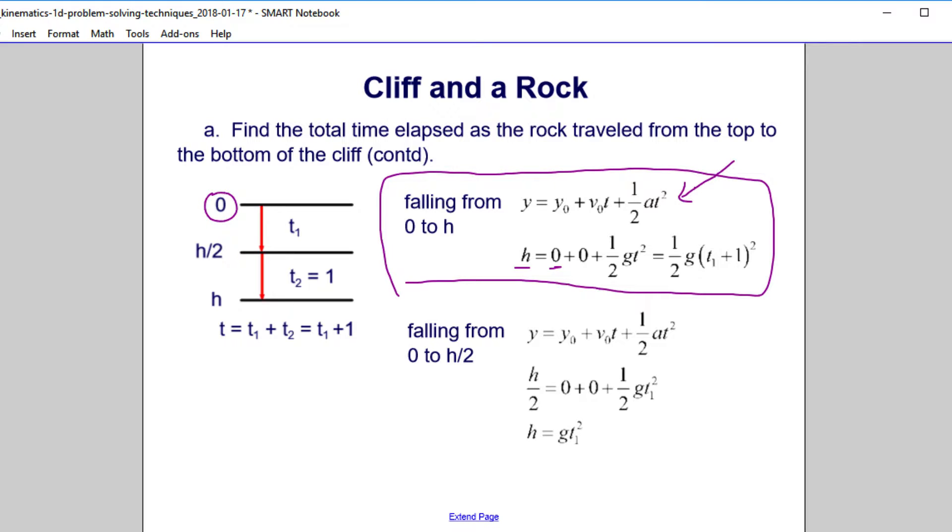And look at this, no v0, so this goes right out. And then we have plus 1 half g t squared. And the plus is because we chose the down direction as positive. So our equation turns out to be 1 half g, and the total time it falls is t1 plus 1, and we square that.